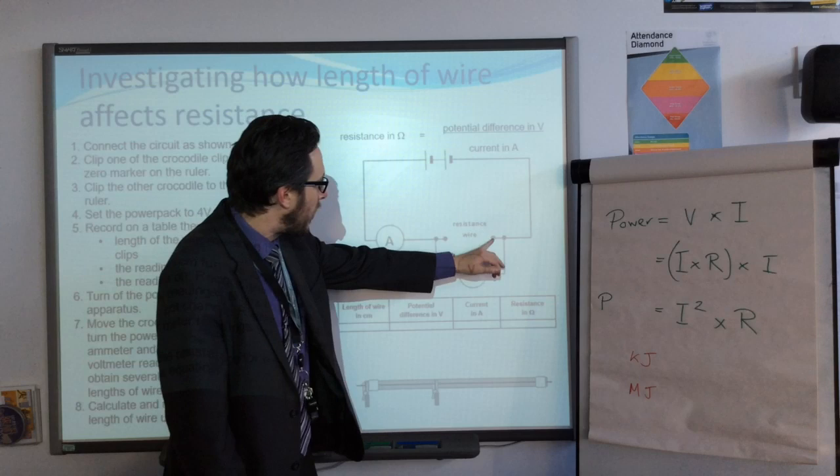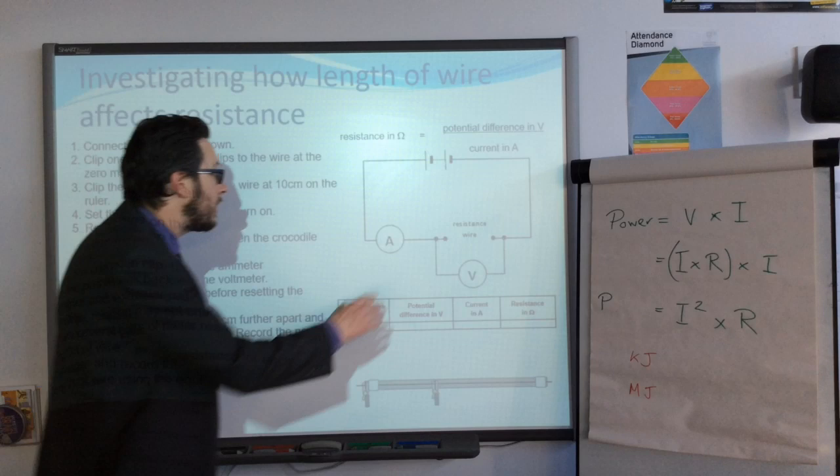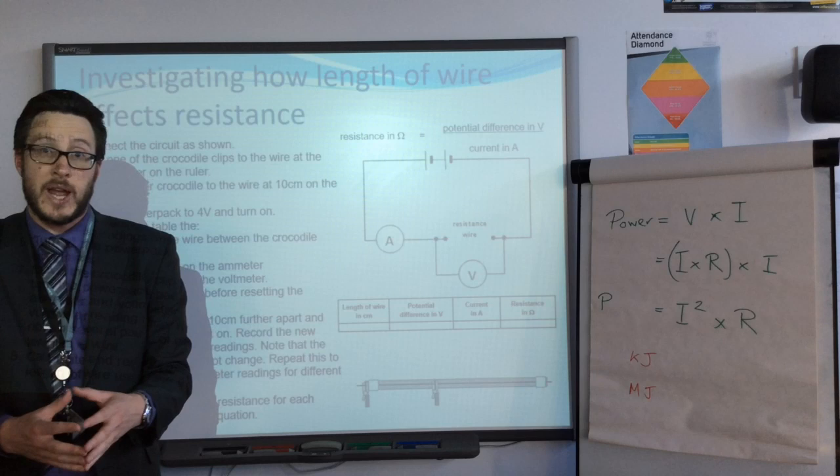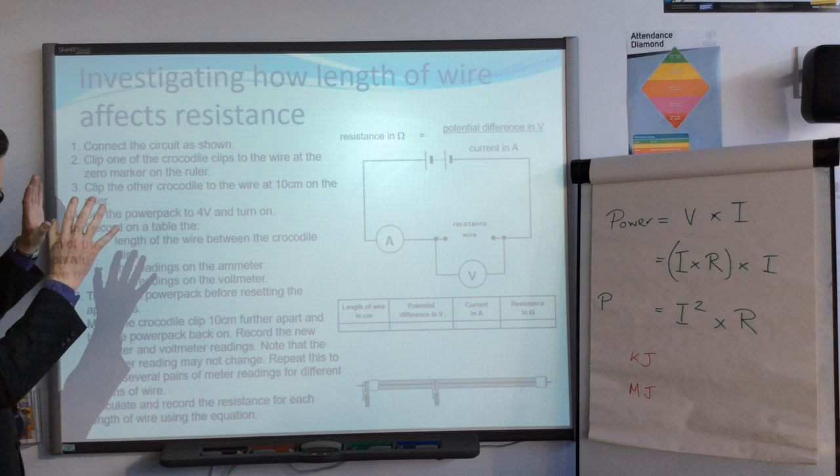The number one risk of this experiment is when this wire has got electrical current flowing through it, it will heat up. Therefore, the risk is that you will get a burn off of that wire because that is an exposed wire that can get hot. So you do need to make sure that you turn off the power pack and allow it to cool down if you see it start to glow.